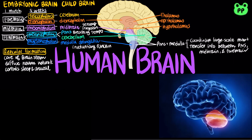The cerebellum is important for coordination and error tracking during motor, perceptual, and cognitive functions. It is also involved in learning and remembering motor skills.